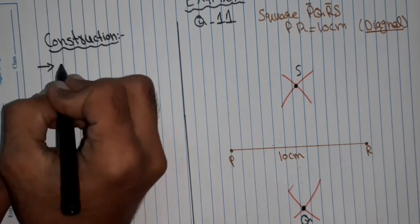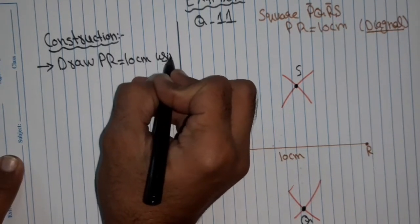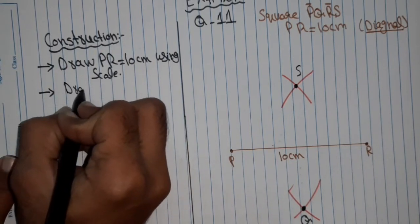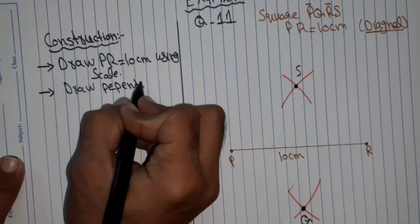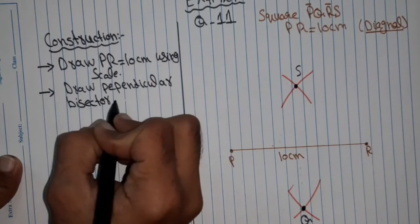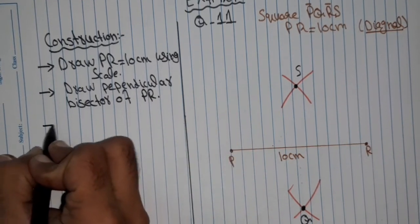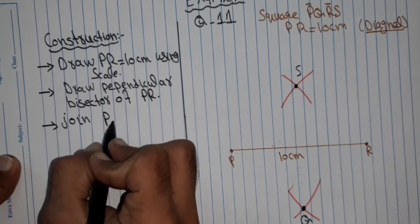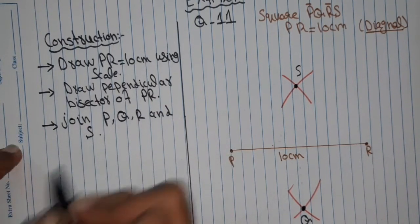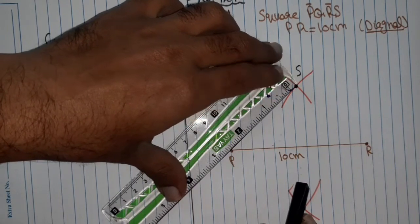Before joining this point we will write construction steps: Draw PR equal 10 centimeter using scale. Second step: draw perpendicular bisector of PR. Now join P, Q, R and S. So now we will join these points.